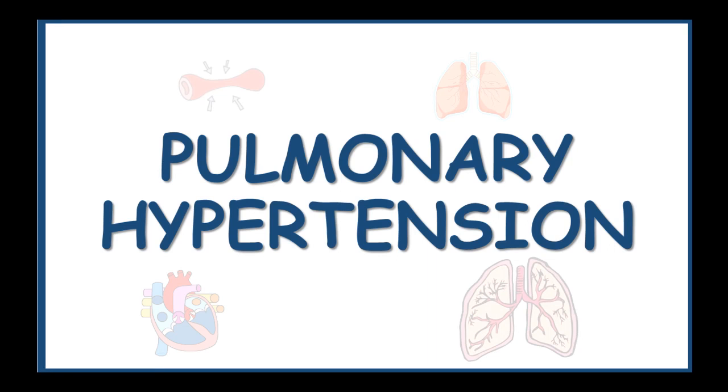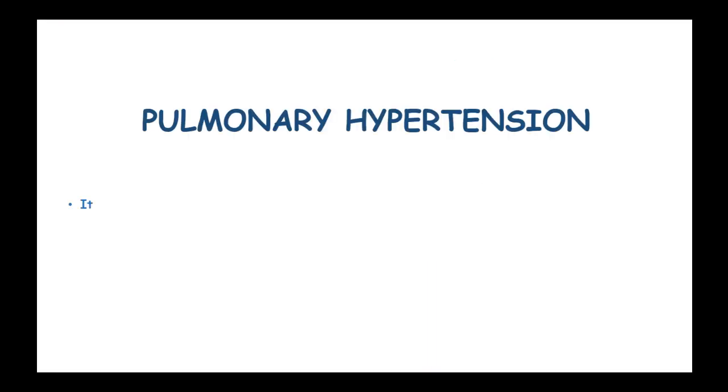Pulmonary hypertension is a mean pulmonary artery pressure of more than 25 mm of mercury at rest.